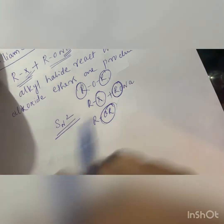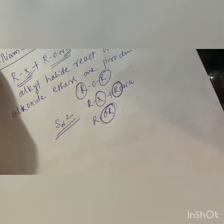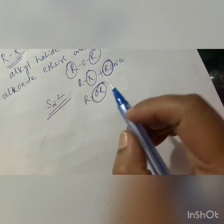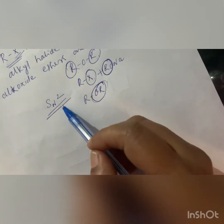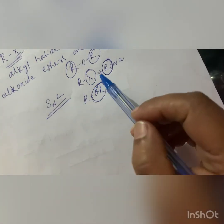Sometimes the question will ask: what is the drawback of Williamson's synthesis? The answer is that ethers in which both R groups are tertiary cannot be prepared. One alkyl group must be primary, and that primary group should come from the alkyl halide only. The mechanism of the reaction is SN2.